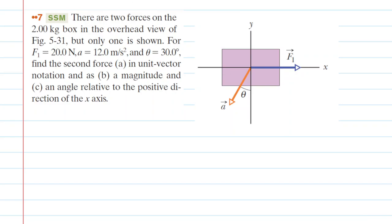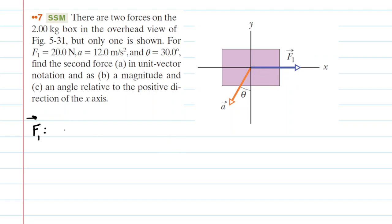Before we can solve this question, we need to establish a couple of important angles. Let's begin with F1, and if you look at the diagram, you can see that F1 is directed along the positive x-axis. This means that the angle for F1 would simply be zero degrees, because we're always measuring our angles relative to the positive x-axis.